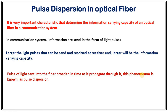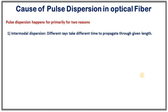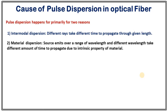There are two major causes of pulse dispersion. The first is intermodal dispersion: different rays take different times to propagate through a given length of optical fiber, and as a result the pulse gets dispersed. The second reason is material dispersion, commonly known from class 11-12. A source emits over a wide range of wavelengths, and different wavelengths take different amounts of time to propagate through a medium due to the intrinsic property of that material — that is why light gets dispersed, similar to dispersion of light in a prism.